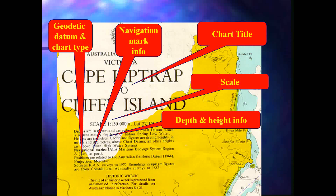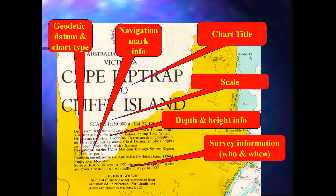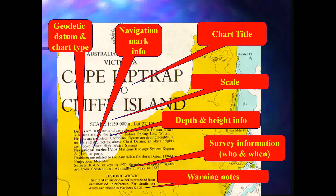Then we have the geodetic datum and chart type positions. This is a Mercator chart and the sources are from the Royal Australian Navy service to 1970; soundings in upright figures are from colonial and admiralty surveys to 1887. Finally, there are warning notes which provide navigational warnings — for example, historic wreck information — and before using this chart you should take note of this, especially when drawing courses, ensuring they are clear of wrecks or any dangers to navigation.